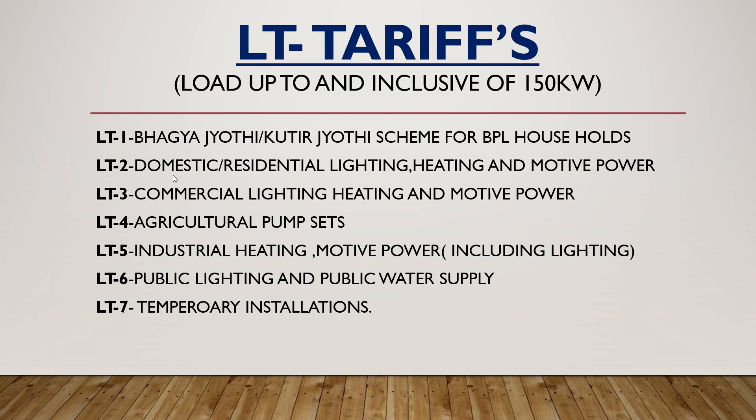LT-3, the commercial tariff, has the highest rate among all tariff categories up to LT-6. LT-4 is used for agriculture pump sets, government-run nurseries, horticulture, and different aquaculture activities. LT-5 is the industrial tariff, used for industrial purposes including industrial lighting, heating, and motive power. LT-6 is used for public lighting and public water supply, mainly applicable for government local bodies and autonomous bodies that control public lighting and water supply schemes. LT-7 is used for temporary installations such as movable and seasonal industries, home construction, and advertisement hoardings.